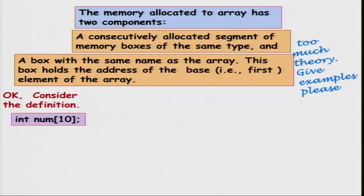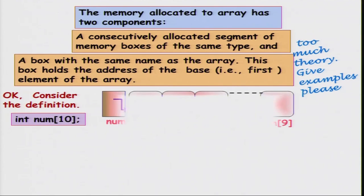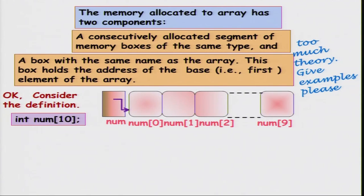Let us be clear with the help of a concrete example. Consider a particular array of size 10 declared as int num[10]. Conceptually, there are 10 boxes from num[0] through num[9], all containing integers, plus there is an additional 11th box num. It has the same name as the array and it contains the address of the first location of the array.